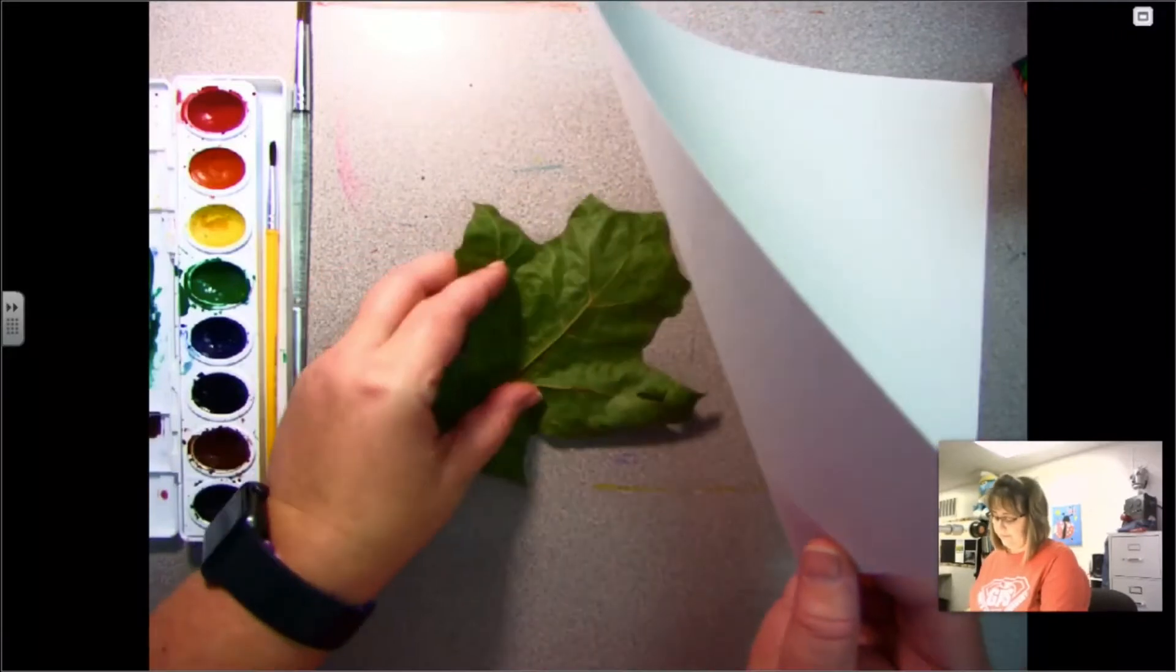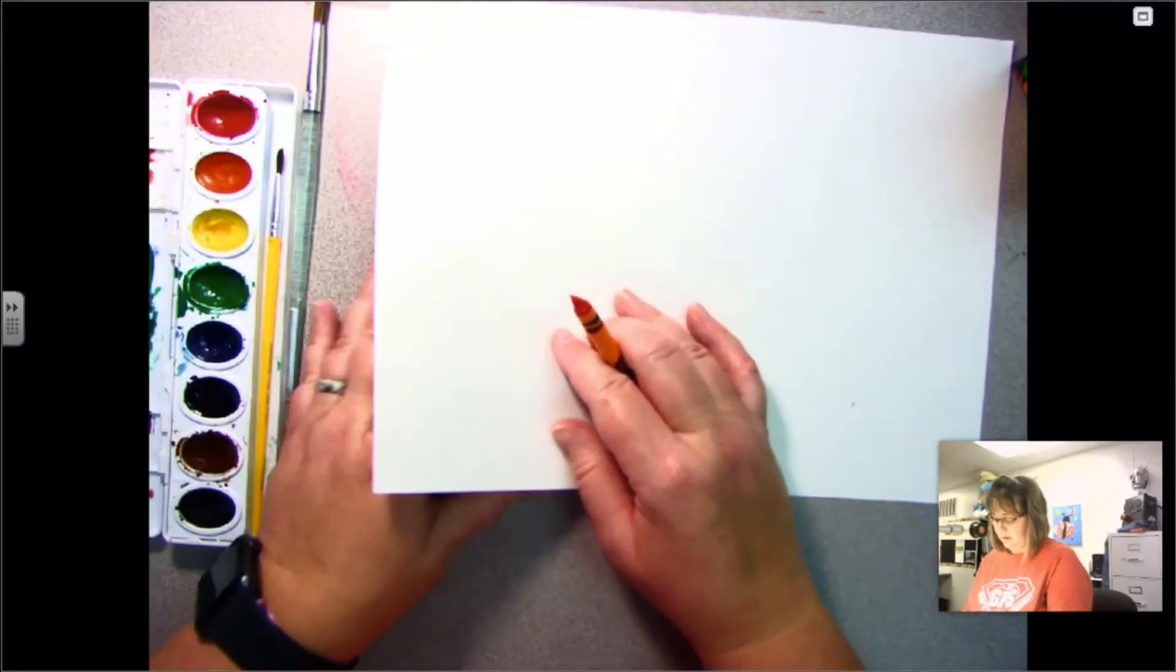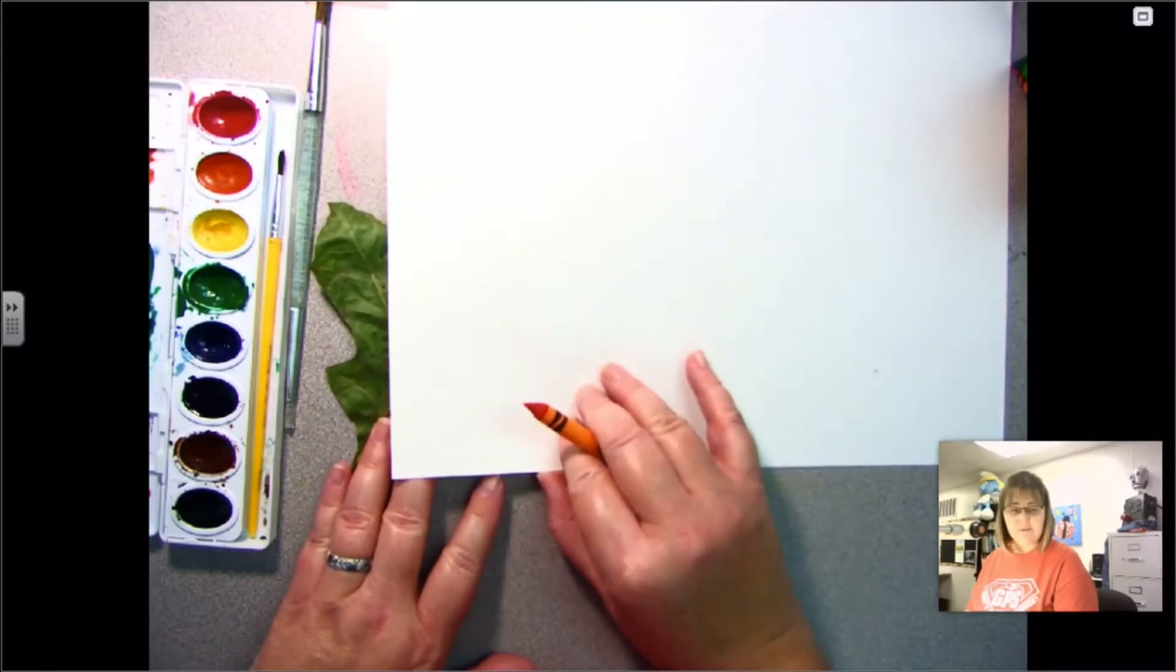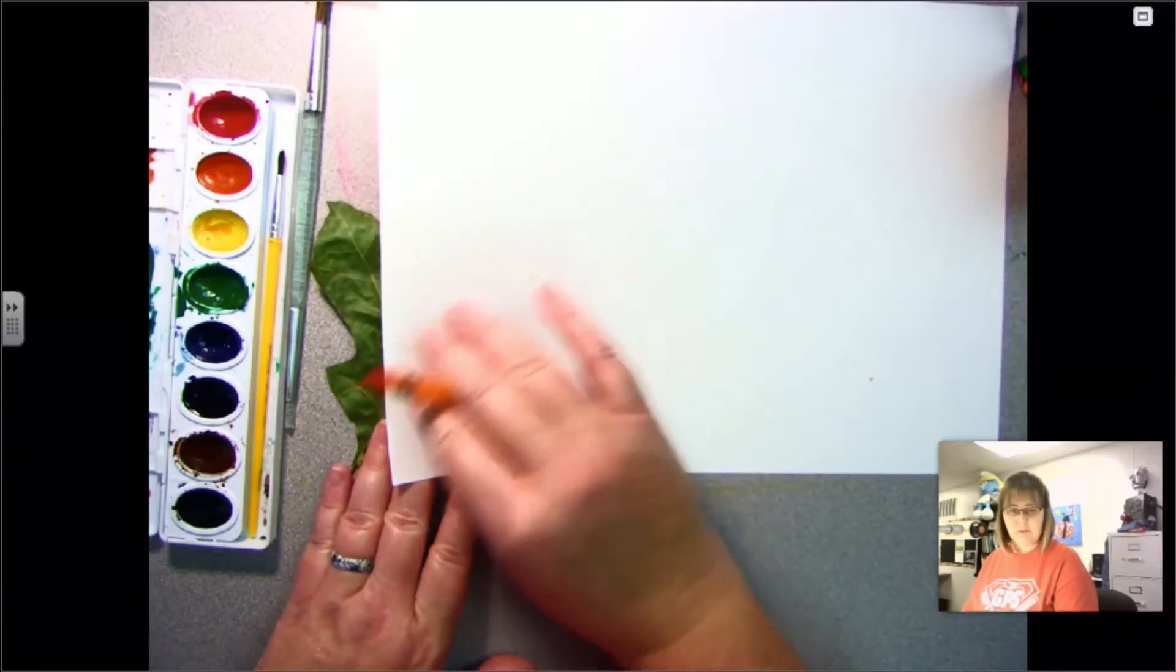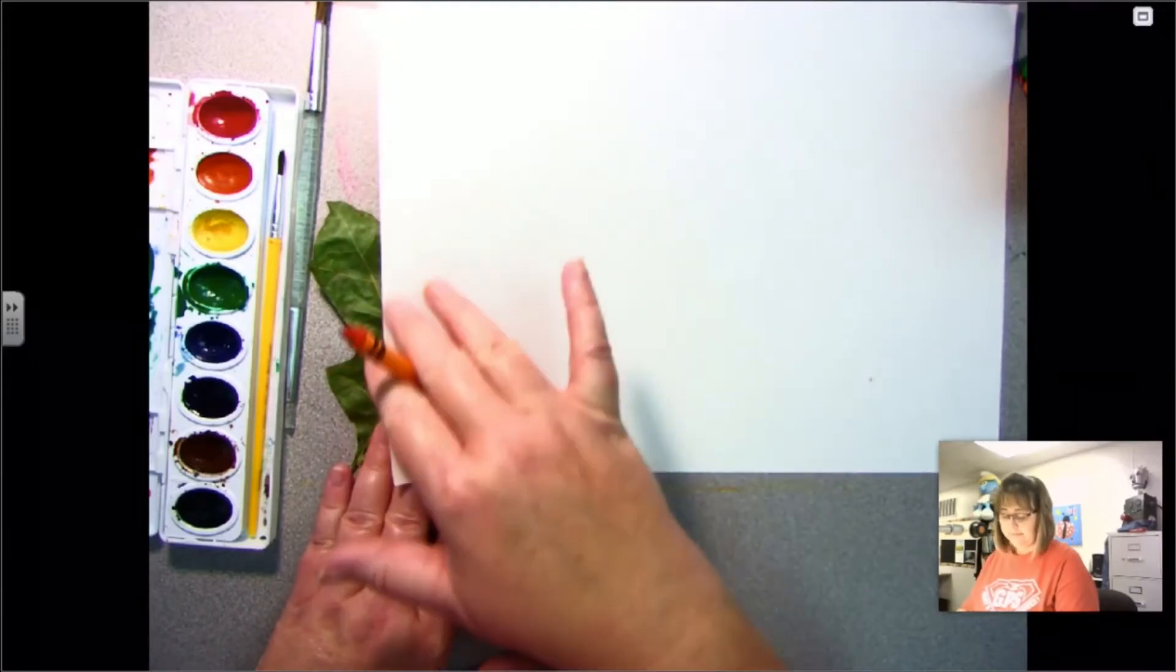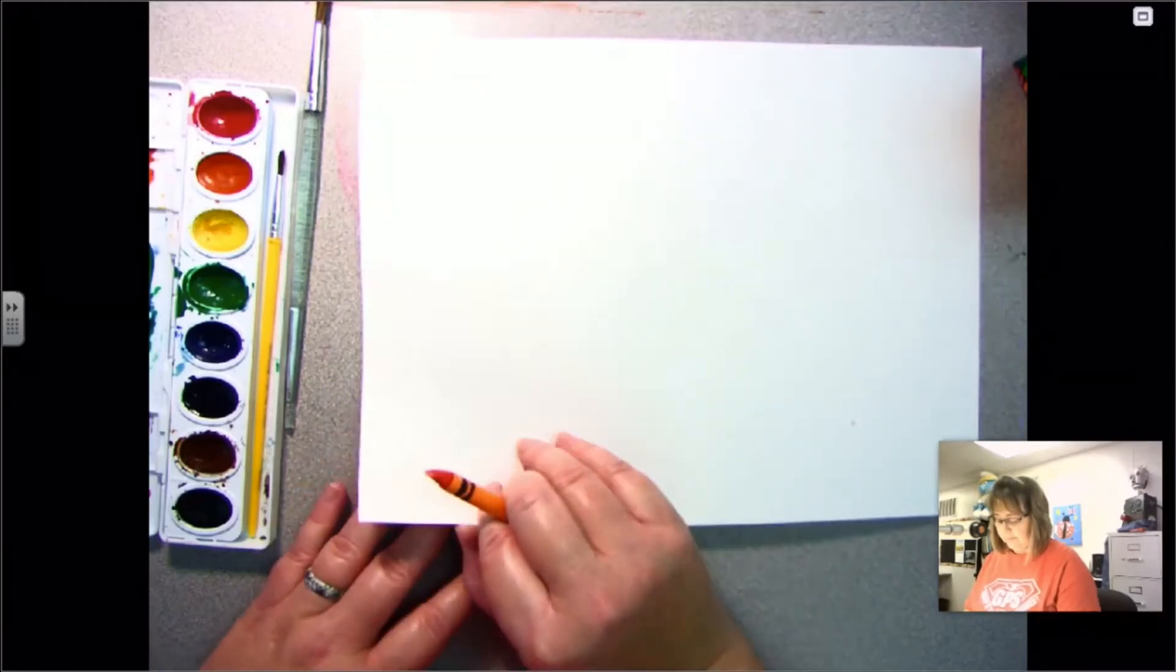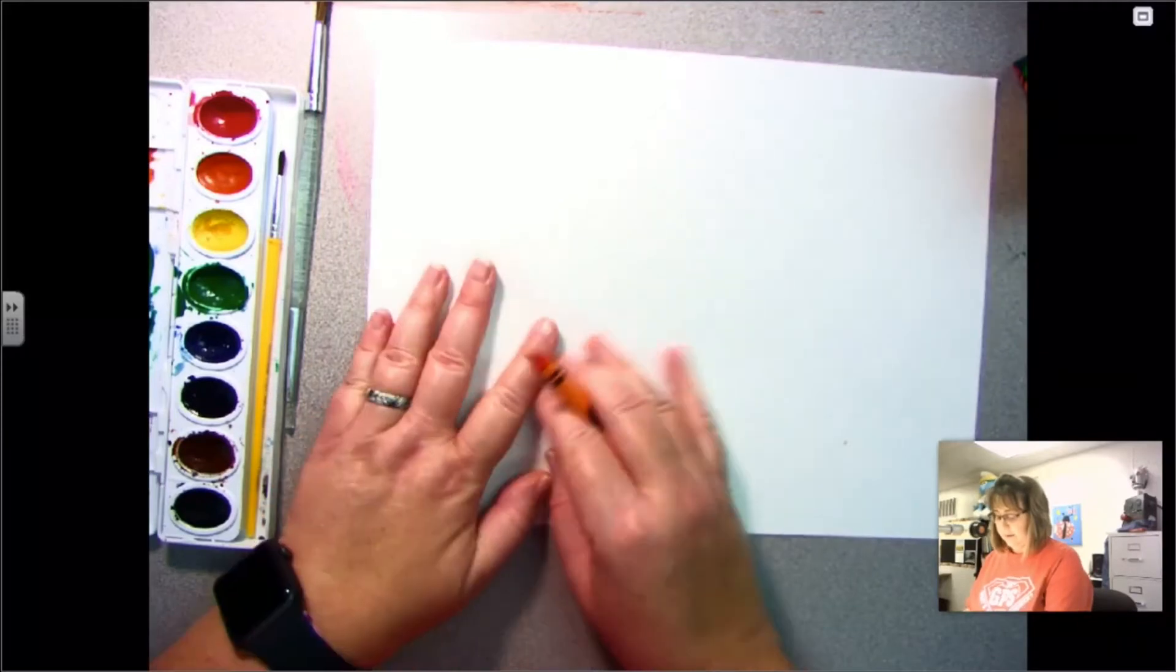I'm going to take this leaf, put it under my paper. It can hang out if you want it to. You would just rub the part that's under your paper. But instead, this time since I'm just starting, this is my first one, I'm gonna fit it right up under here.